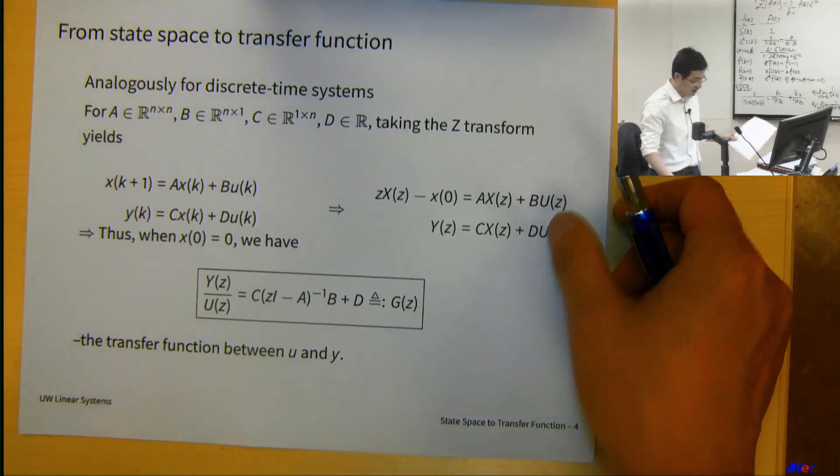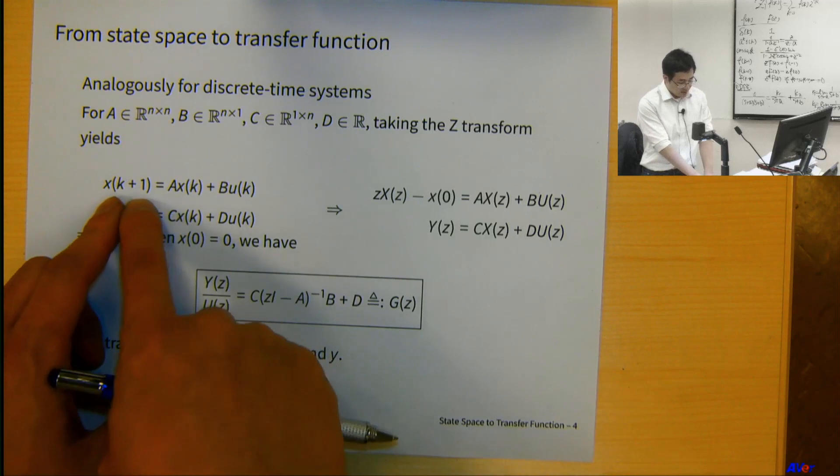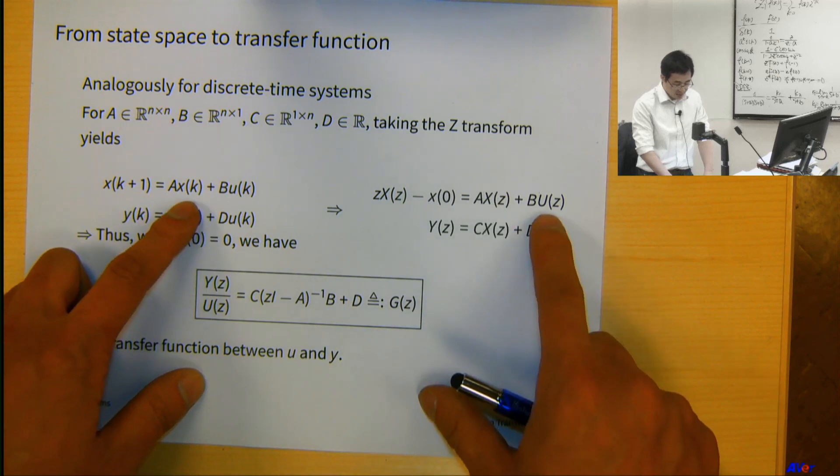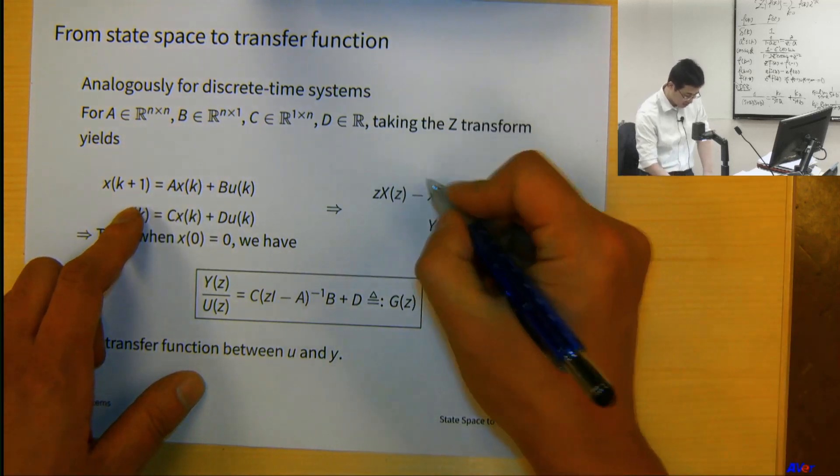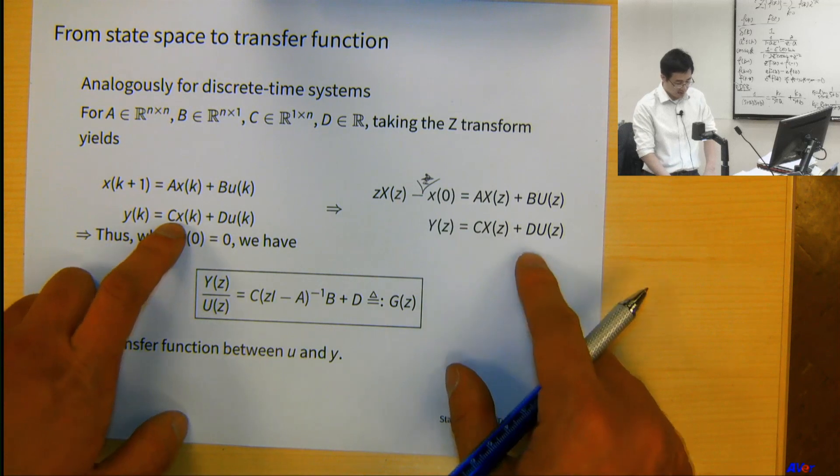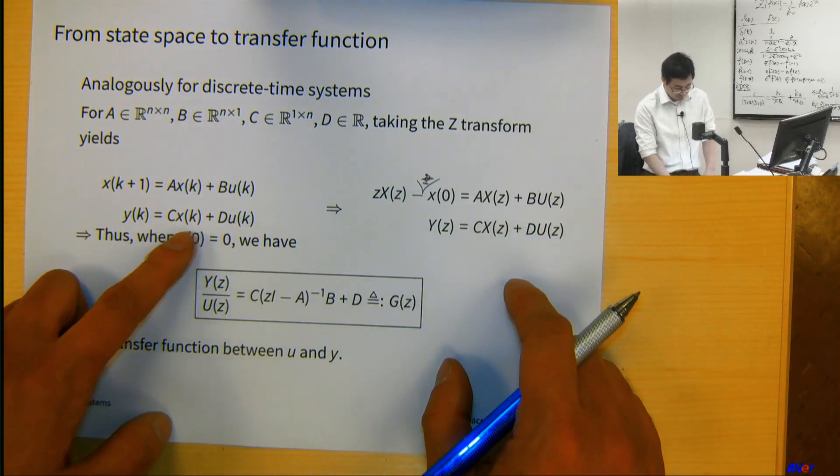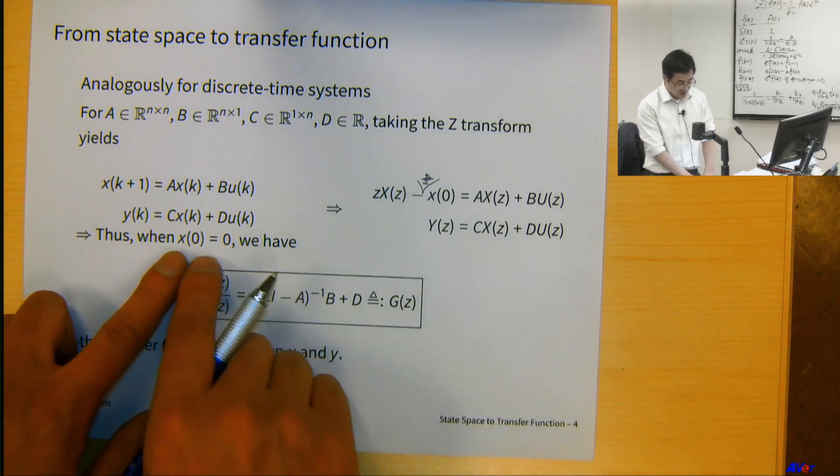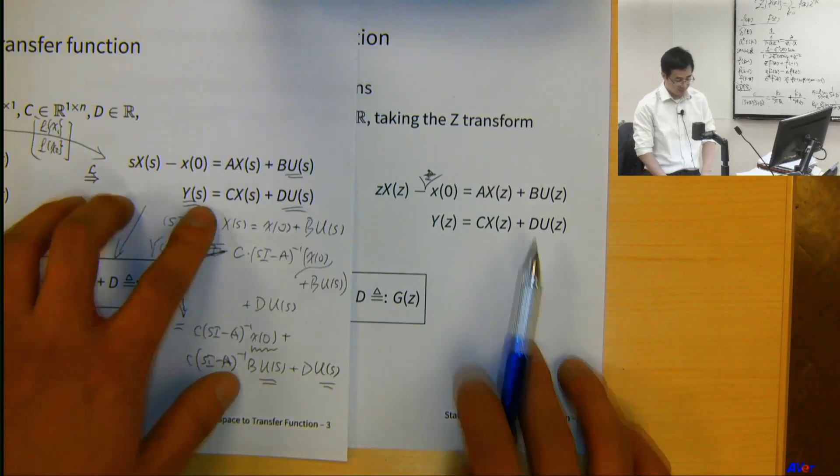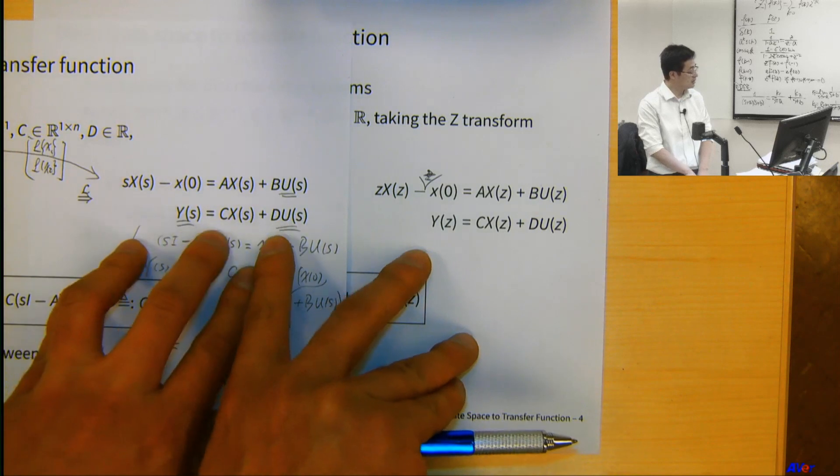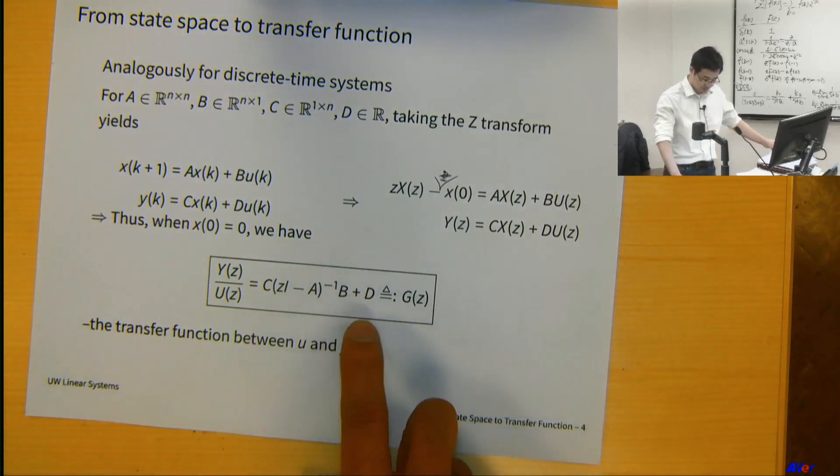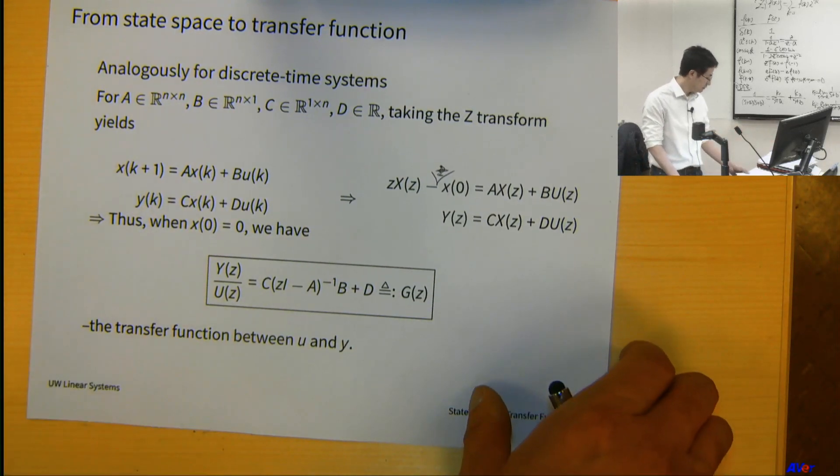Discrete time system is exactly the same thing. One step advance is z times x of z, then Az plus Bu, and y is Yz = Cx(z) plus Du(z). All these are exactly the same. If the initial condition is zero, you get the relationship between u and y. It's exactly the same formula, very similar to each other. The transfer function formula is the same.